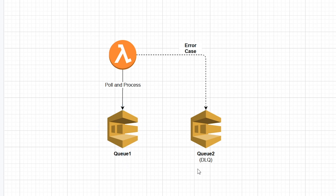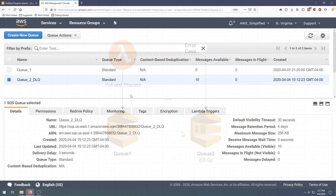There is a slightly more hacky way to do this where you can make the dead letter queue the source of the lambda function, but please don't do that — it's actually going to cause more problems and it's not worth it. So the method is pretty straightforward and we're going to go to the console right now and I'll show you exactly how to do it.